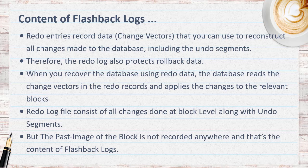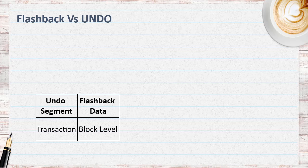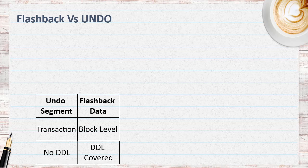So flashback is different from the traditional undo rollback operation. But how are undo data and flashback data different? Undo data is used for transaction rollback, and flashback data is used for block-level rollback. Due to this, undo rollback is not possible for DDL operations, but flashback can rollback even DDL operations.